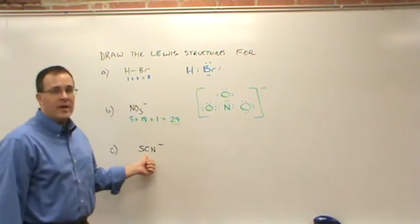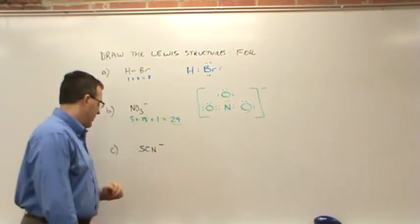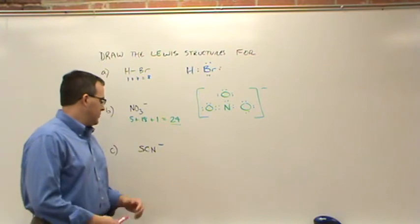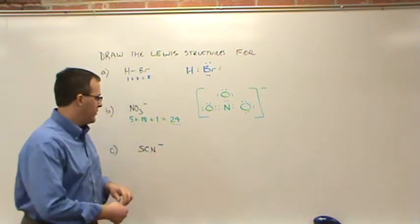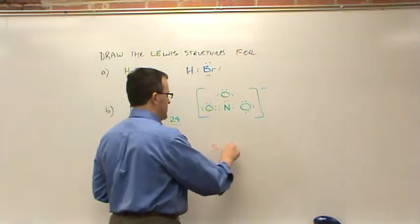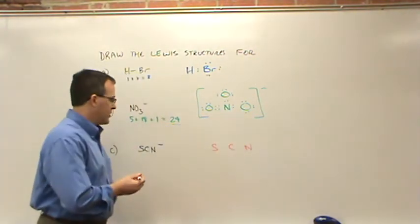Now, the last one, SCN minus, the thiocyanate anion. Well, which one should we put in the middle? Always put carbon if you have a choice. So SCN. Let's count up our total electrons.